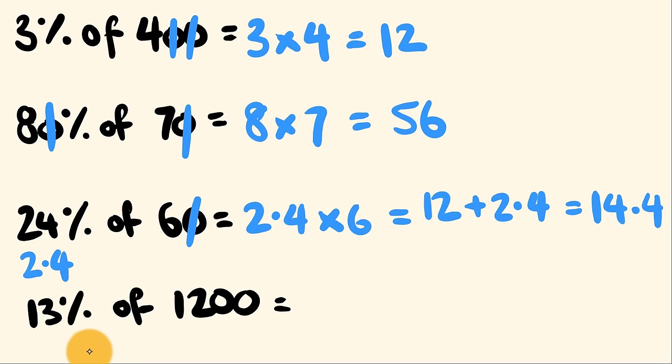All right, finally, we have 13% of 1,200. Now this one, really obvious, it's a bit of a no-brainer. You're going to be dividing by 100 and it is this 1,200. We're going to divide by 100 to get 12. So we're left with 13 multiplied by 12. 13 multiplied by 12, this is equal to 156. Really simple.